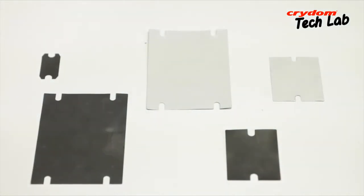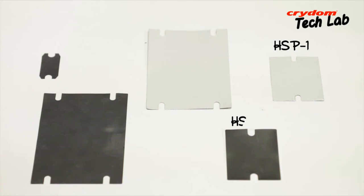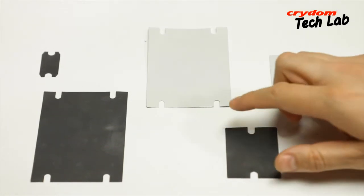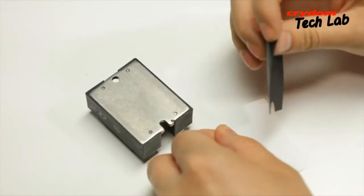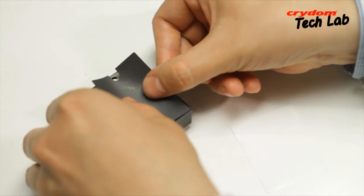Crydom offers a variety of thermal pads with and without adhesive for installation between the SSR and heat sink. If you choose to use an adhesive pad, be sure to remove the protective film or backing from the adhesive side of the thermal pad.